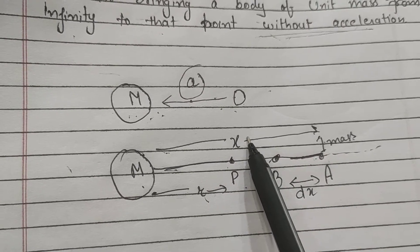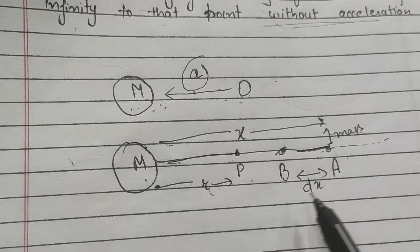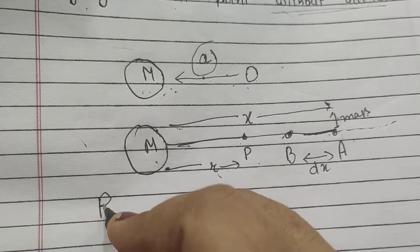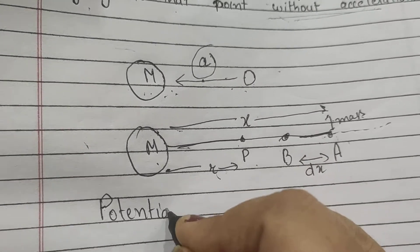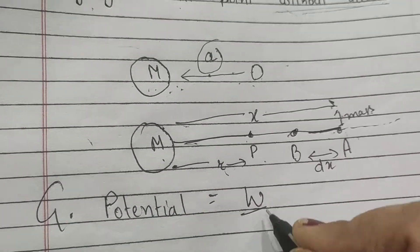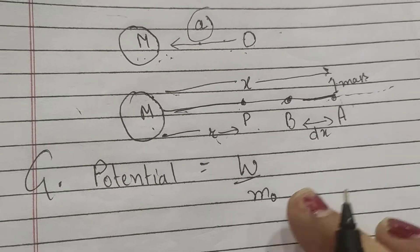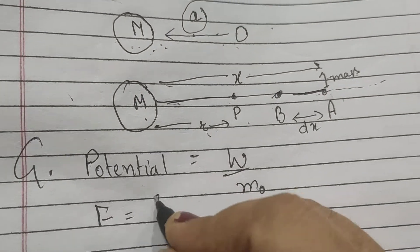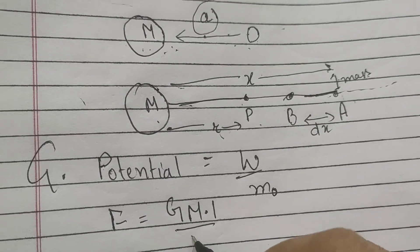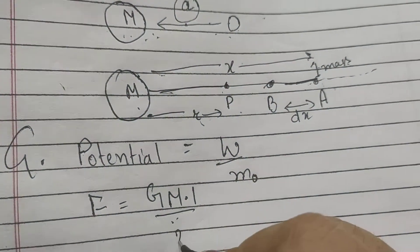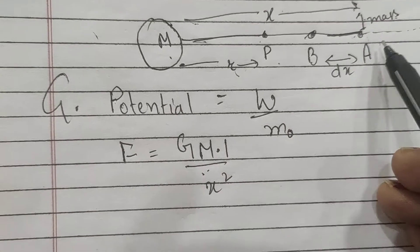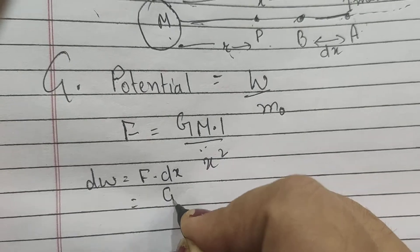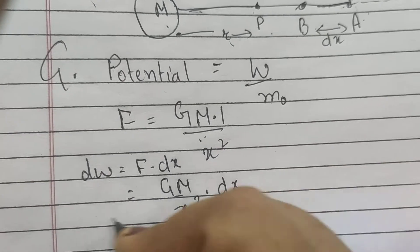Initially the particle is at position A at distance x, and we move it through a displacement dx. Gravitational potential is equal to work done per unit mass. To find work done, the gravitational force is F = GM × 1 / x², since the initial distance between the bodies is x. The small amount of work done in displacing the body from A to B is dW = F · dx = GM / x² · dx.